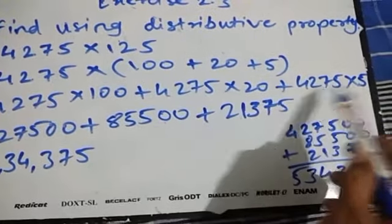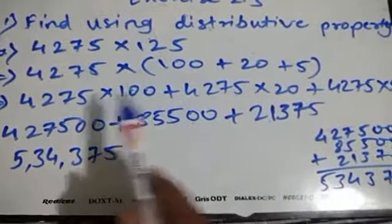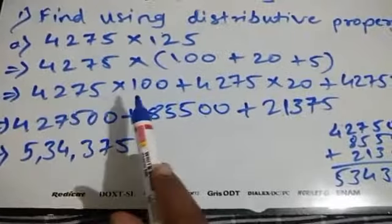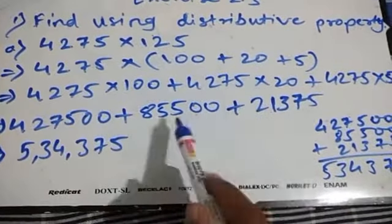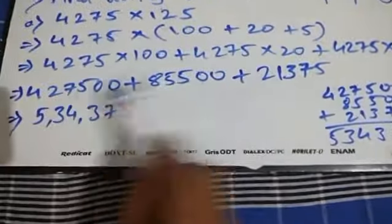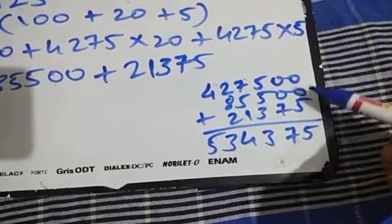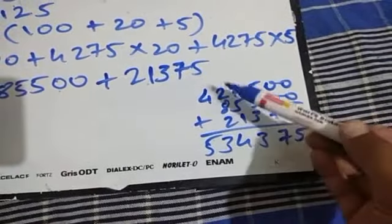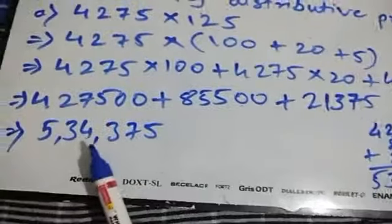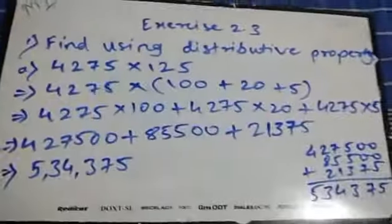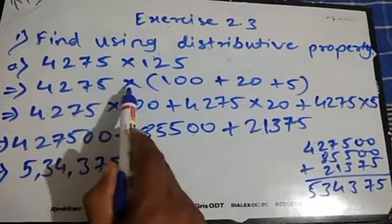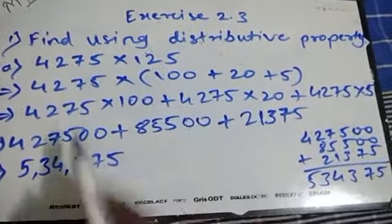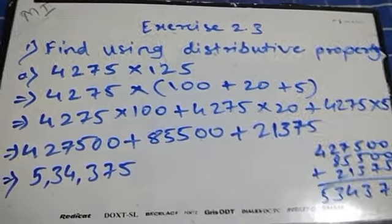Multiplying with 100, 20, and 5 separately makes it much easier than using the long multiplication method — and can even be done mentally. Adding the three results: 4,27,500 + 85,500 + 21,375. Working through the addition carefully gives the final answer: 5,34,375. The key step was writing 125 as 100 + 20 + 5 and multiplying each part separately with 4275.